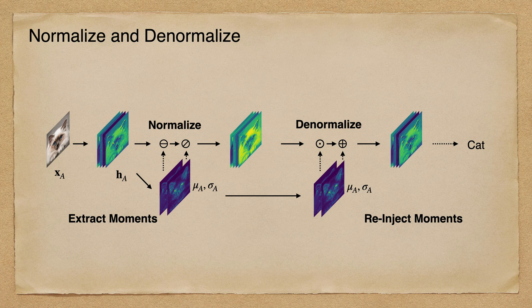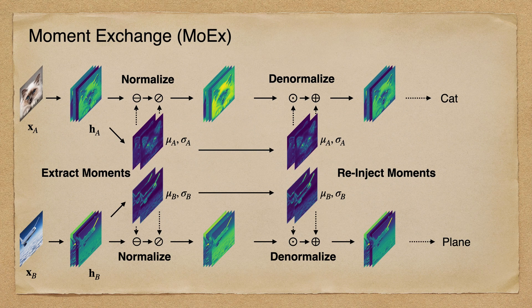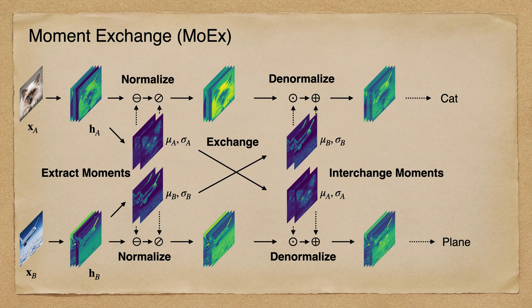Given an input image, we will get deep features after each layer. The normalizing operation extracts moments from features, and the denormalizing operation re-injects the extracted moments back to the features. To begin, we feed two different inputs into the model. The original normalizing and denormalizing operations extract the moments and re-inject them. In MOX, we propose to exchange the extracted moments and re-inject the swapped normalization constants to the features.